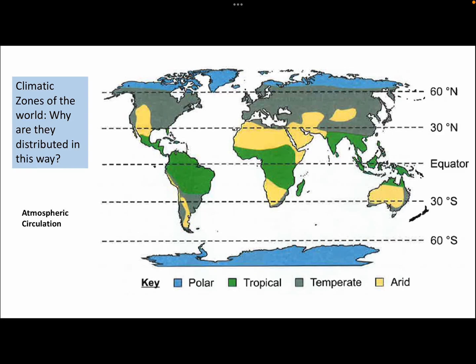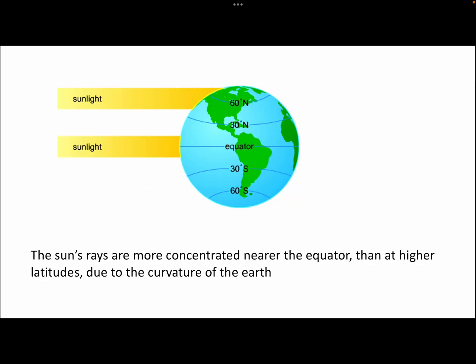Tropical climates tend to be located along the equator of planet Earth, whereas arid, dry climates are located along the tropics. The reason why areas close to the equator are much warmer is all to do with the sun's energy being more concentrated near the equator than at higher latitudes, and that's down to the curvature of the Earth. The curvature of the Earth means the sun's energy is spread out over a much greater area nearer the north and south pole, meaning the sun's energy is less concentrated. That explains why warmer climates are found along the equator and cooler climates are located further away.